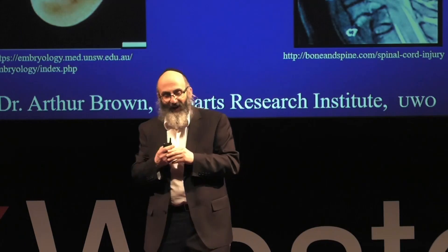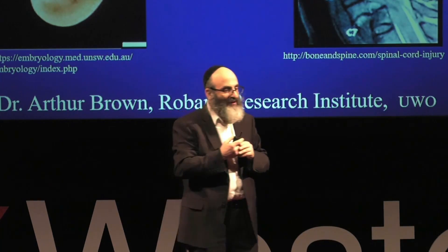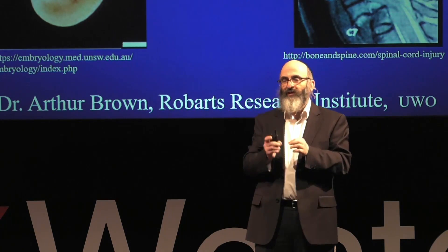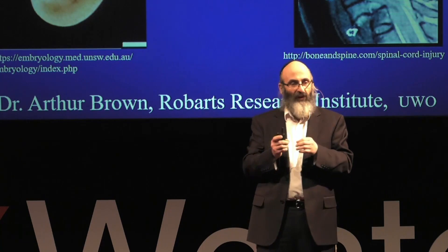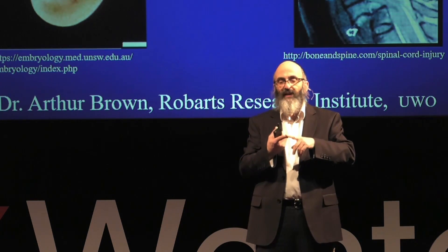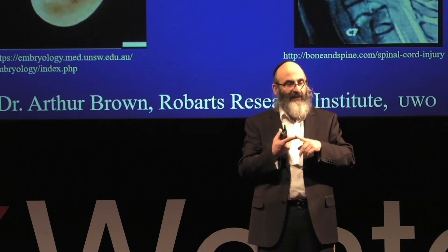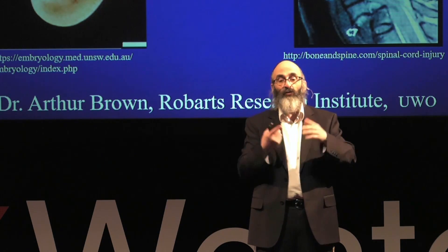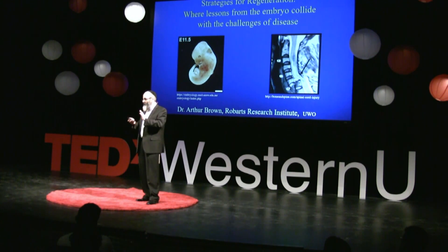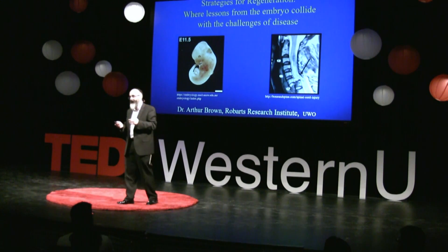When I went to undergrad, we were told that while peripheral nerves can grow if they're damaged — so if you cut a nerve in your finger, it will regrow — nerves in the CNS, the central nervous system, the brain and spinal cord, don't. That was sort of dogma. In a moment, we'll talk about why and whether or not that's true, but let's first talk about what the nervous system can do.